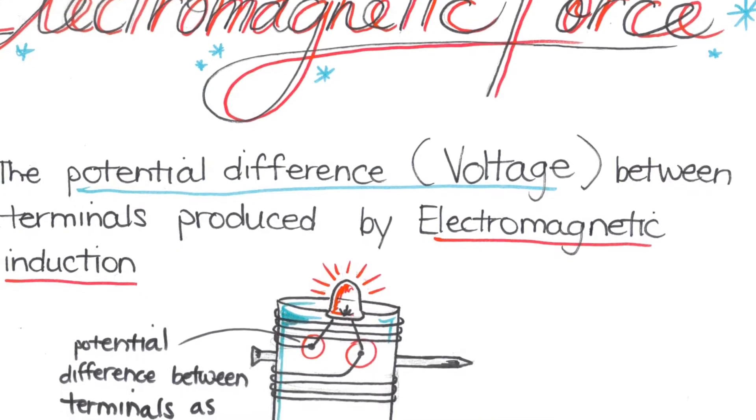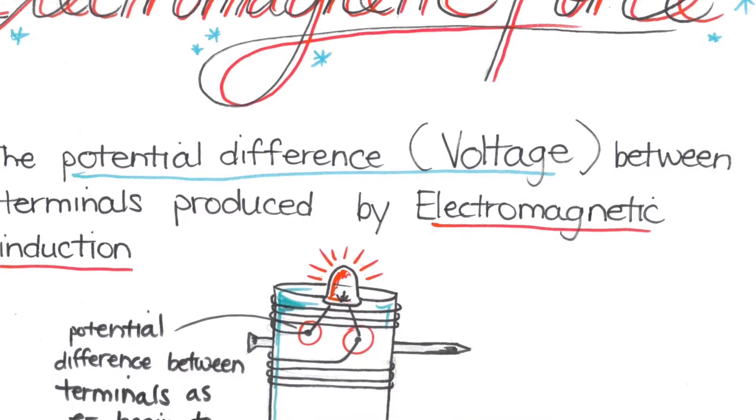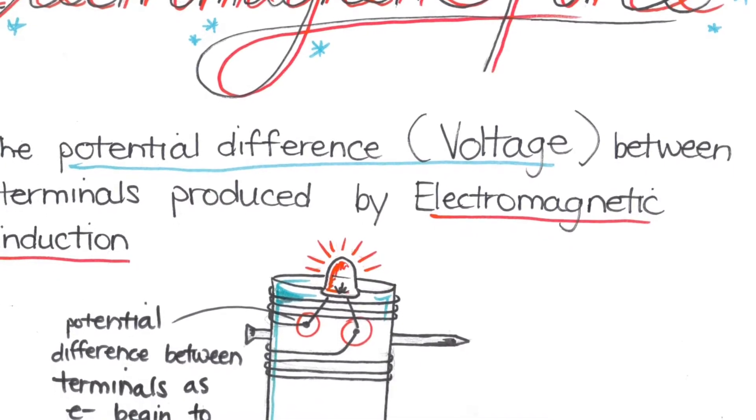When the magnets begin to rotate, the electrons flow through the coil, creating voltage and current within the conductor.